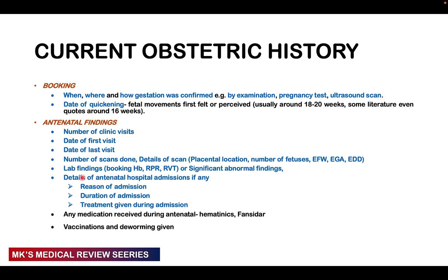Check for any abnormal lab findings: the booking haemoglobin, booking RPR, and retroviral test result at first antenatal visit. If blood pressure was measured, note the booking blood pressure and any other significant abnormal findings from the antenatal card. Ask if the patient has been admitted — the reason, duration, and treatment given — and whether any complications were incurred. Ask about medications received during antenatal care: ideally haematinics, fansidar, tetanus vaccinations, and deworming.